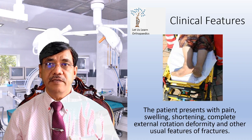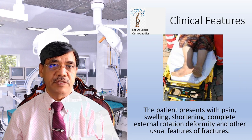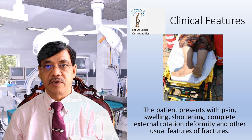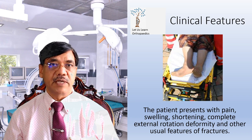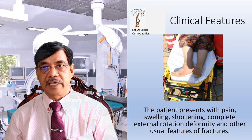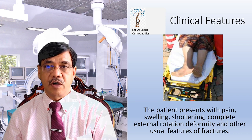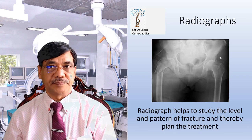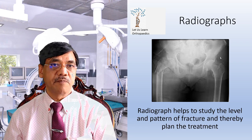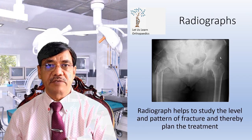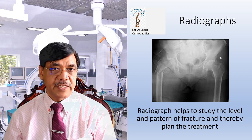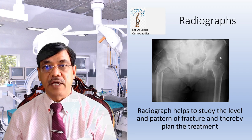Clinically, the patient presents with pain, swelling, shortening, complete external rotation deformity of the lower limb, as seen in this picture, and other usual features of fracture. Radiographs help to study the level and pattern of the fracture and thereby plan the treatment.